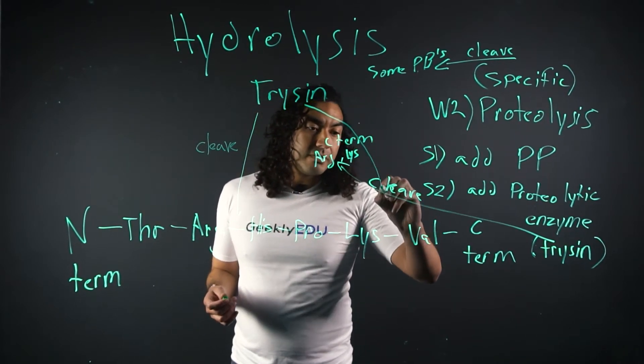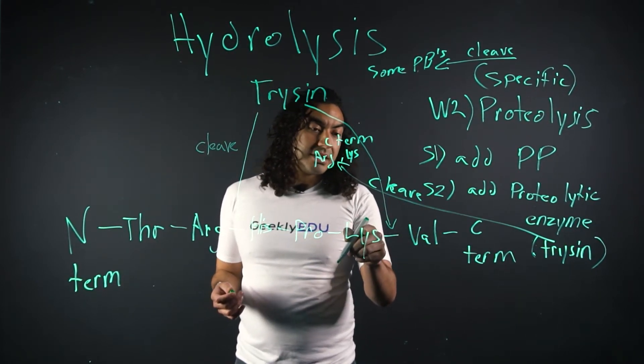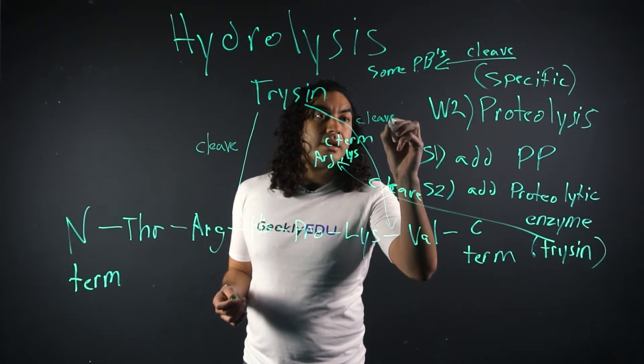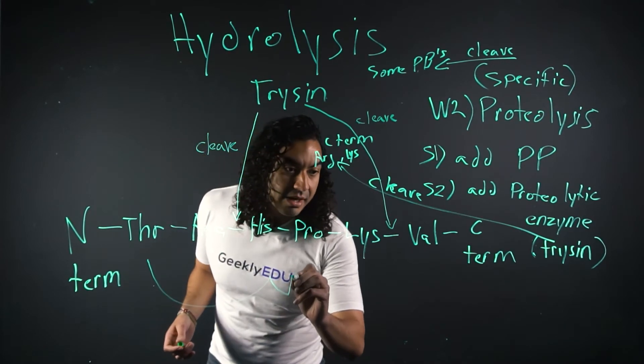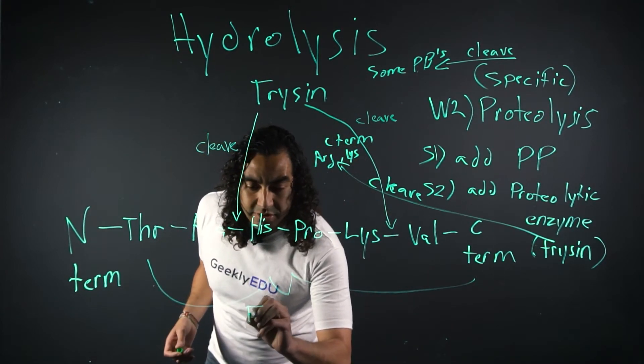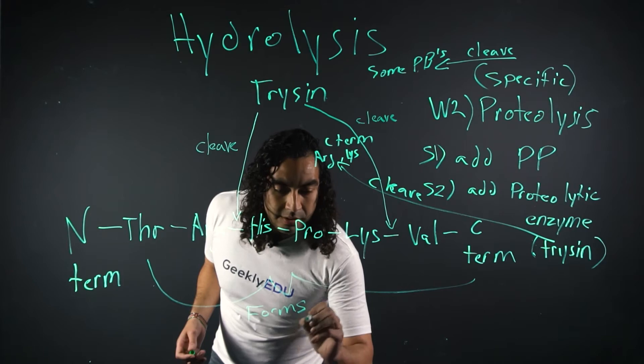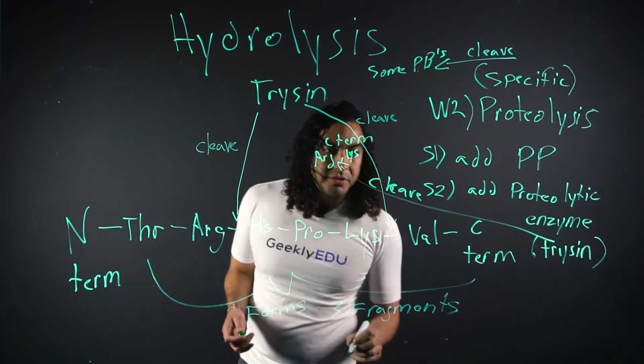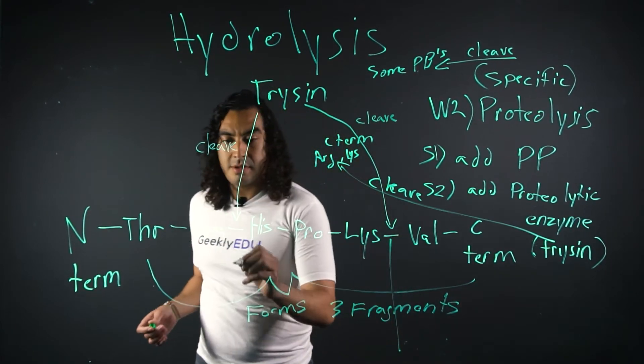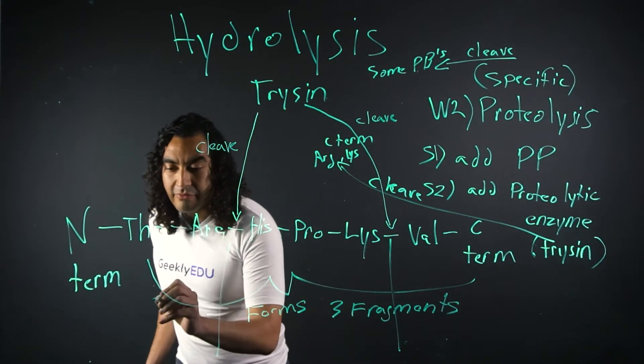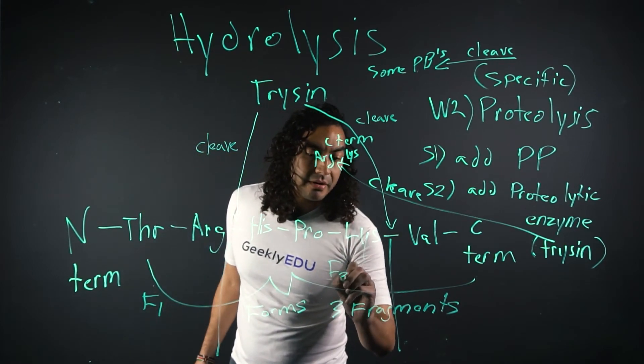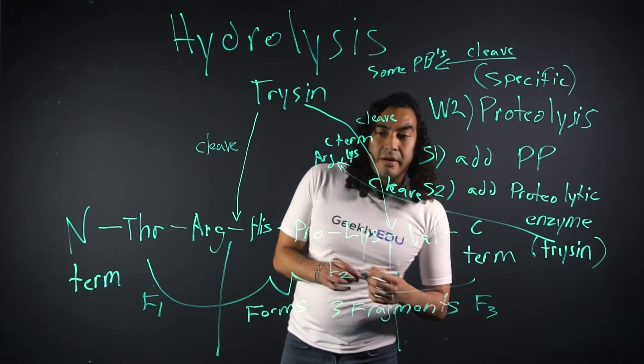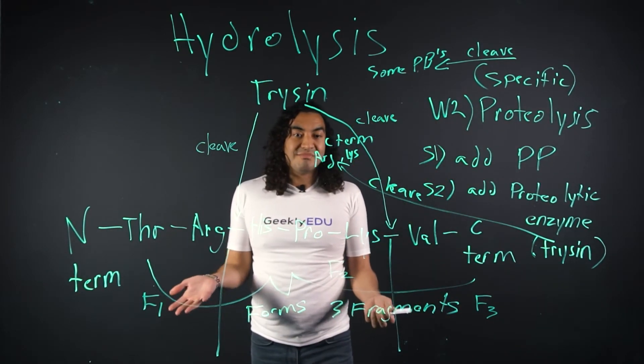And it's also going to cleave on this lysine amino acid peptide bond on the C-terminal. So we have a cleavage here. And what happens is now forms three fragments. So we're going to have a breakage here, breakage here. So we're going to have fragment one here, fragment two here, and fragment three here. That's how you cleave a peptide bond.